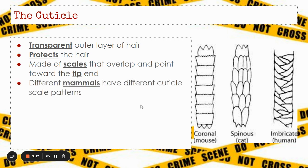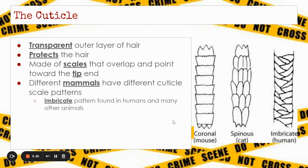Different mammals have different cuticle scale patterns. For example, this kind of square shape is characteristic of a mouse. This spinous pattern is characteristic of a cat. Humans have this kind of overlapping scale pattern called imbricate. That's the pattern found in humans, and it's found in a lot of other animals too, so just because you see imbricate doesn't mean it's human, but that is one indication that it could be a human hair.